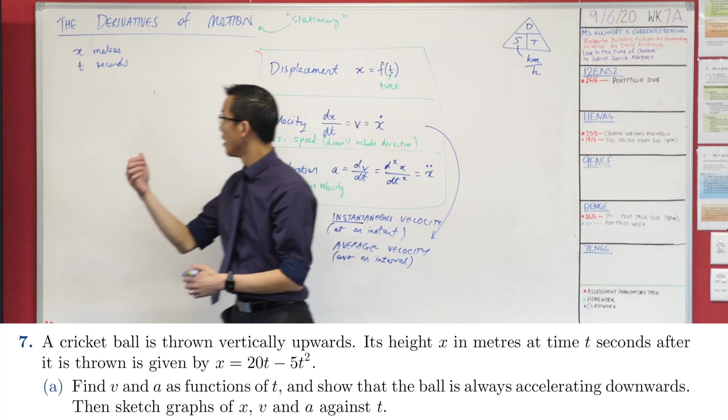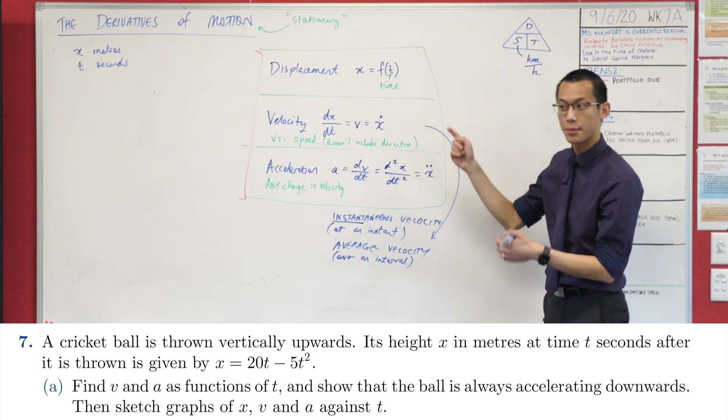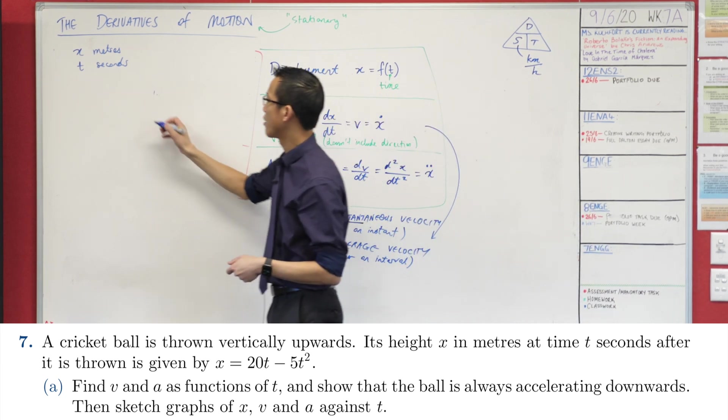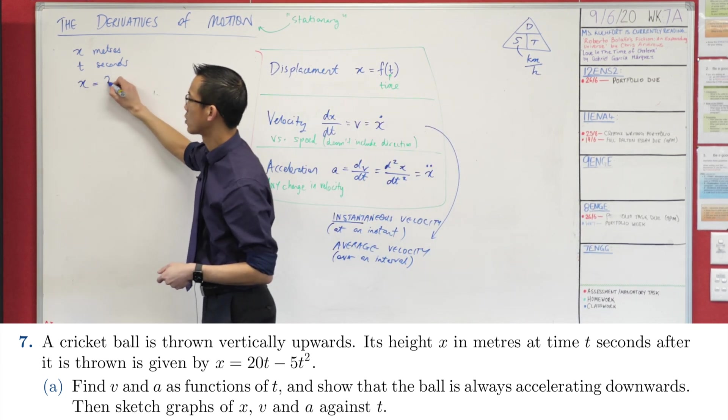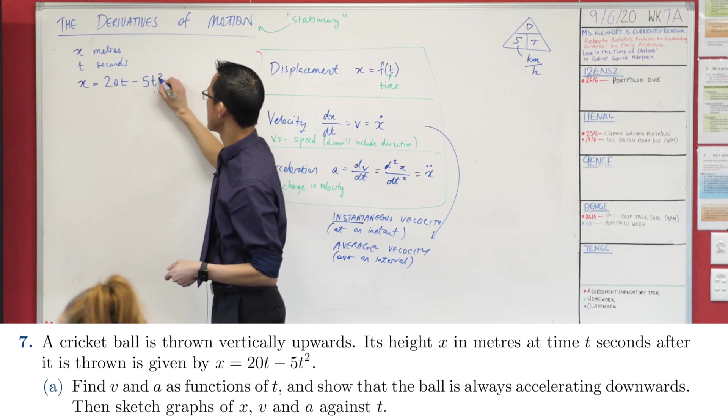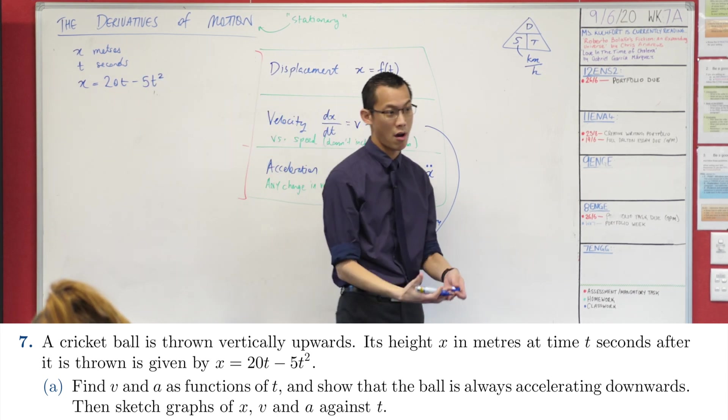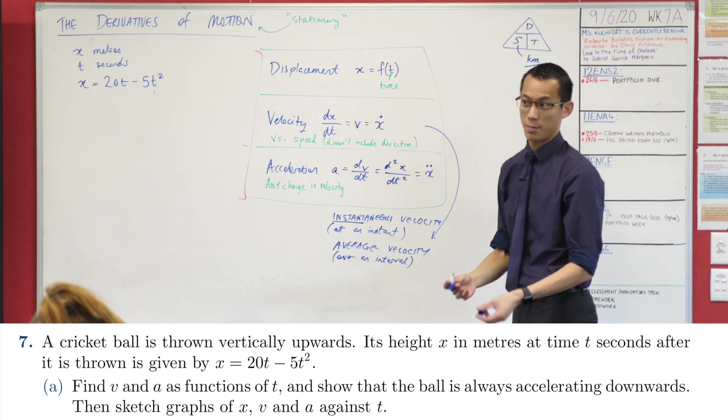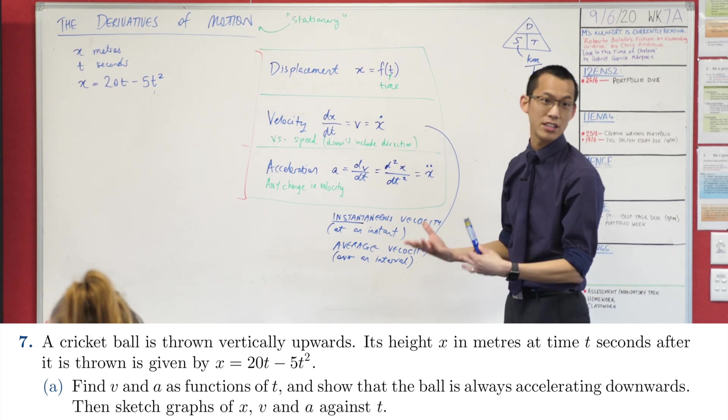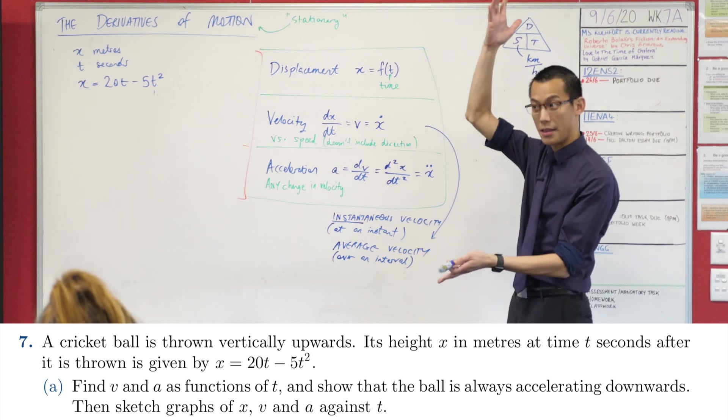So this tells us how displacement and time are related to each other. So let's go ahead and write that down: x equals 20t minus 5t squared. So if you know the time, I can tell you the displacement. After some number of seconds, I can tell you where the ball should be up in the air.